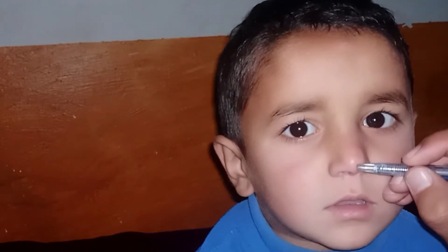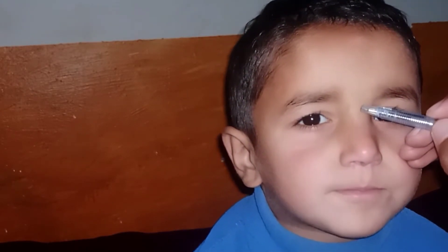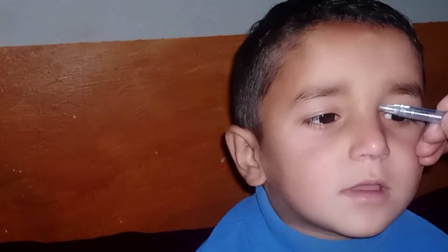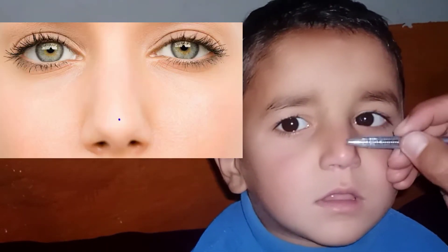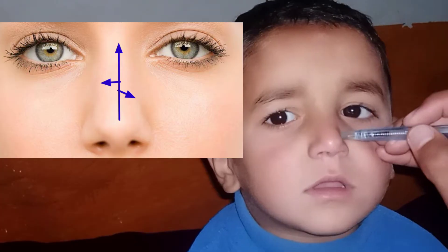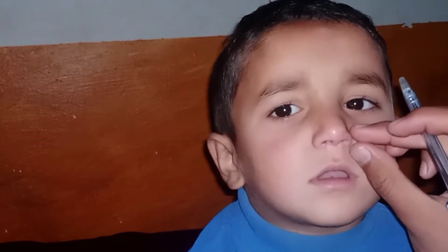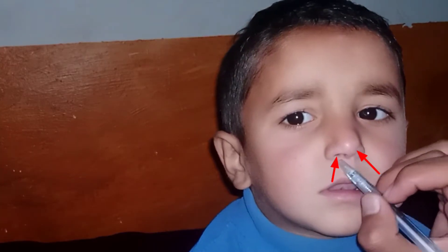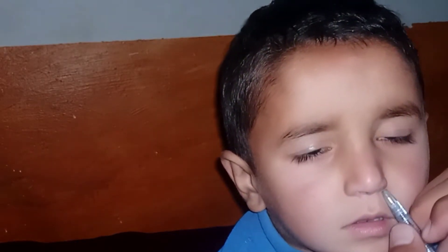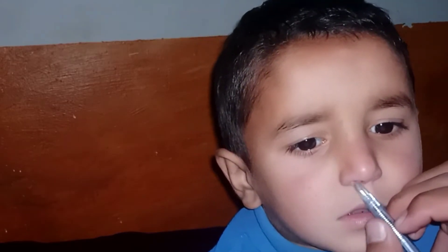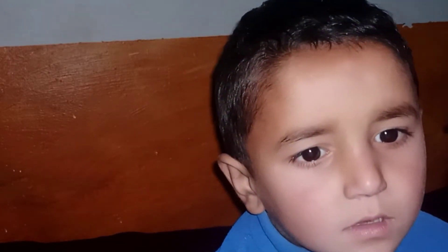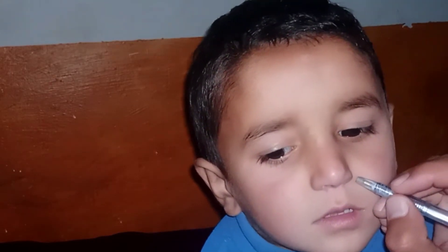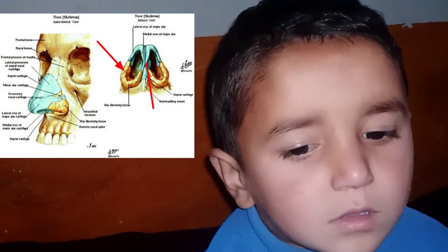This part of the nose is called the tip of the nose, and this is called the root of the nose, which is the junction between the forehead and the nose. This rounded part and the adjacent area is called the dorsum of the nose. These two holes are called the nostrils, and this flexible part is called the ala of the nose. One nostril is on the left side of the nose and the other is on the right side. It is bounded laterally by the ala and medially by the nasal septum.